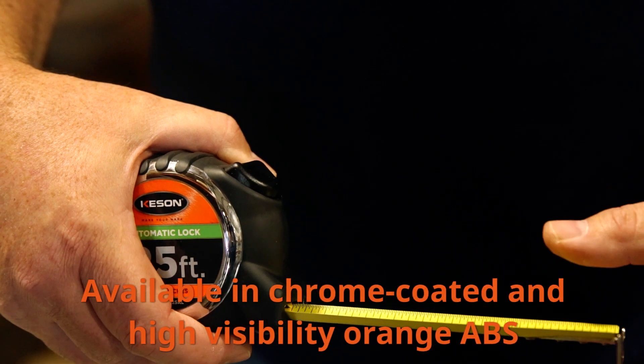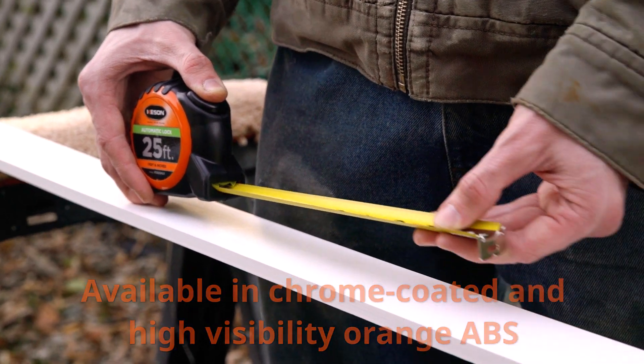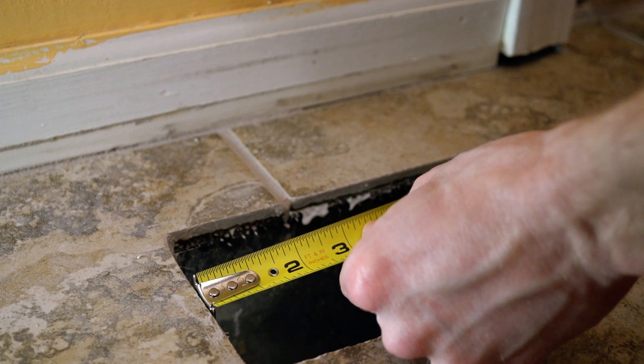Kassin AutoLock tapes are available in both chrome coated and high visibility orange ABS case. We offer this tape in 25 feet lengths. Our single unit offerings are standard feet in inches.